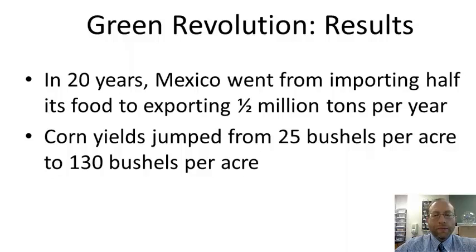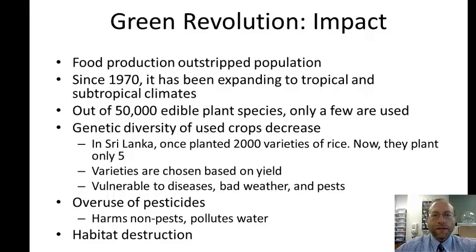Mexico was the first place where the Green Revolution was tried. Over 20 years, Mexico went from importing half its food to exporting half a million tons. Corn yields jumped from 25 bushels per acre to 130 bushels per acre. A positive impact is that food production has outstripped population. Malthus had predicted a population crash because food production grows geometrically while population grows exponentially, but food production has grown much faster than Malthus predicted. Since 1970, the Green Revolution expanded to tropical and subtropical climates, not just temperate regions.